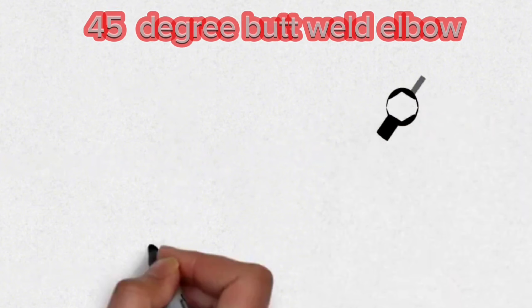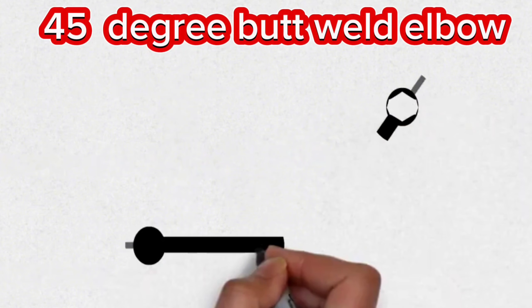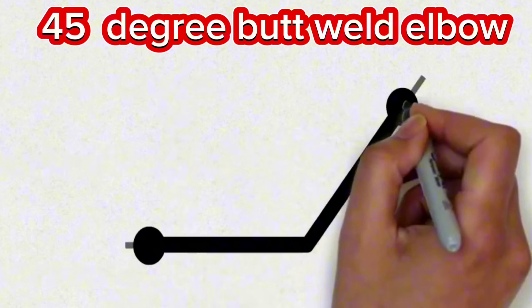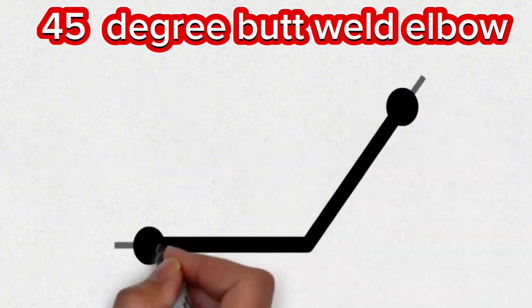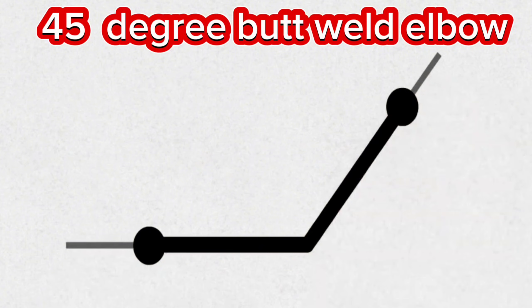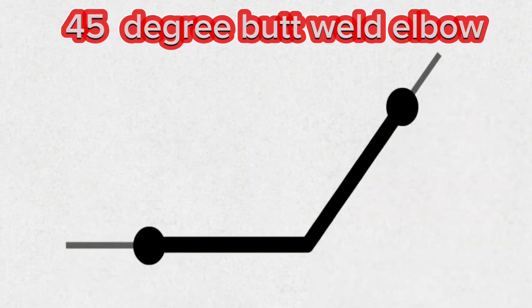This symbol, which is used in pipe isometrics, is the isometric symbol of the 45-degree butt weld elbow. These 45-degree elbow symbols are used in pipeline projects where welding.